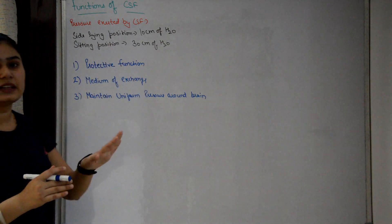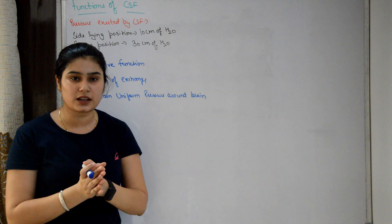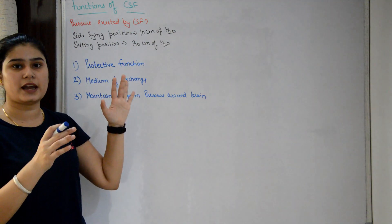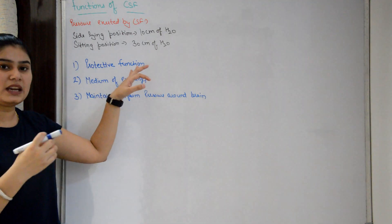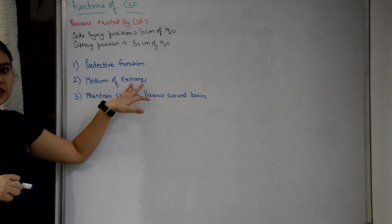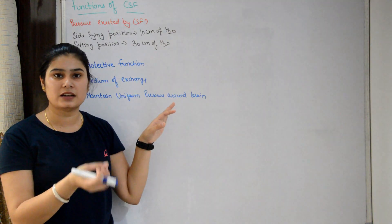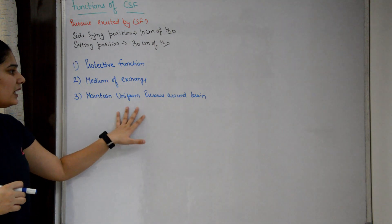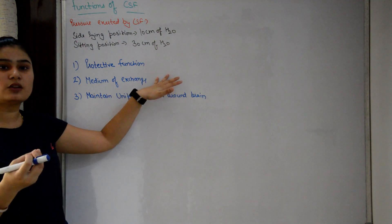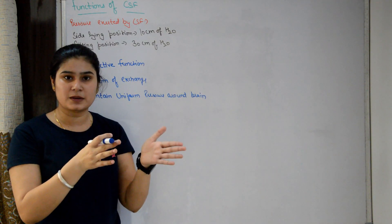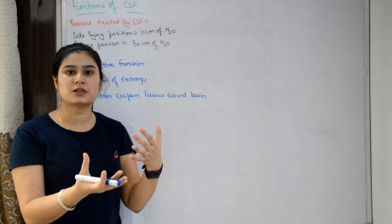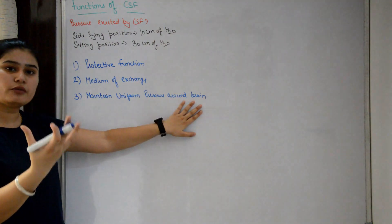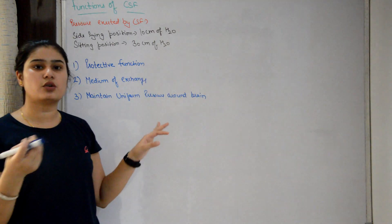To summarize the functions of CSF: First, it has a protective function — it acts as a shock absorber protecting the brain and spinal cord from physical injury. Second, it serves as a medium of exchange — providing nutrients to nervous tissue and removing toxins through the blood-CSF barrier. Third, it helps maintain uniform intracranial pressure around the brain.